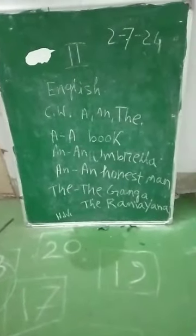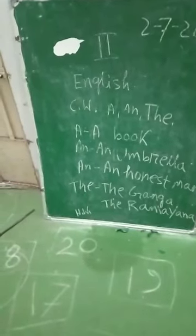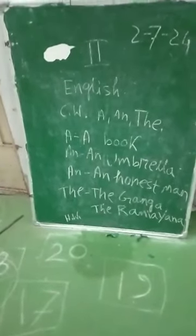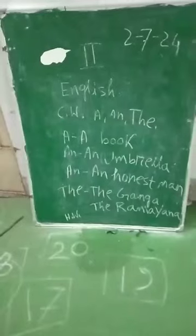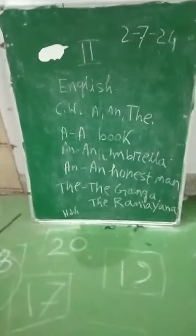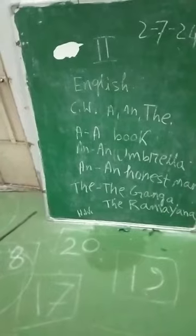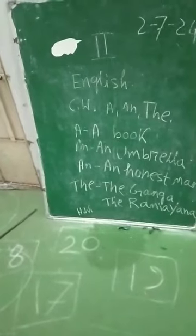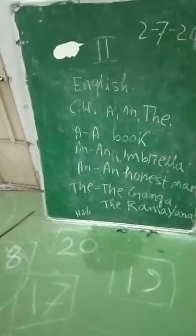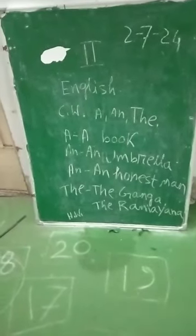But in this case, there is an article. This is a positive article. In this case, there is an umbrella. The umbrella is called 'umbrella'.